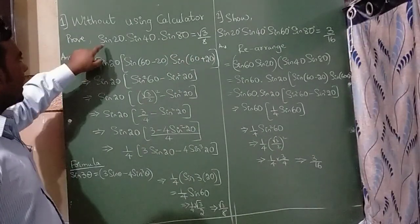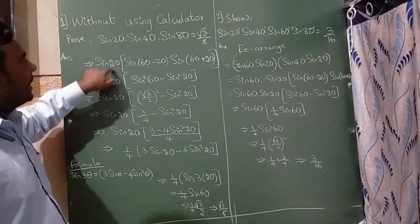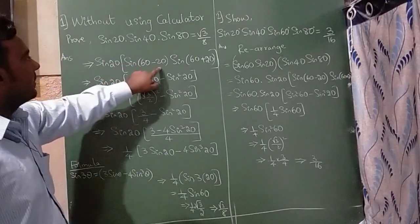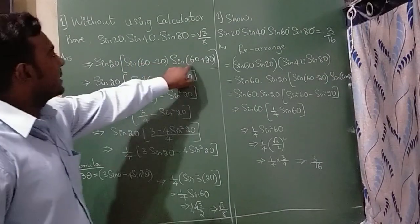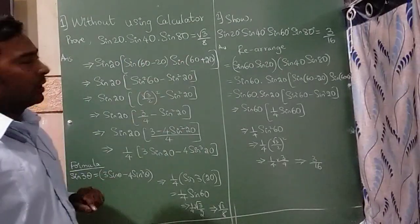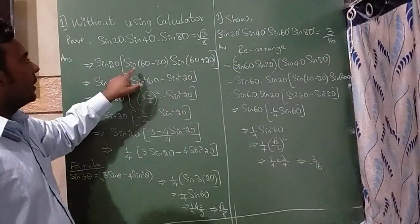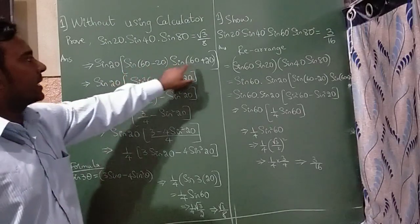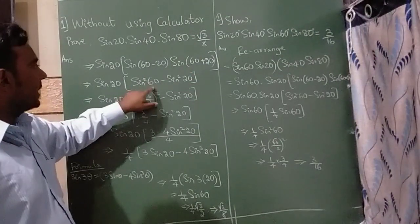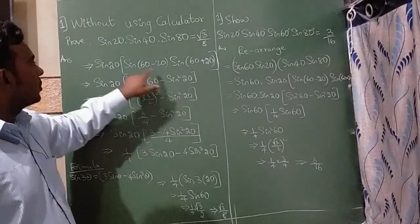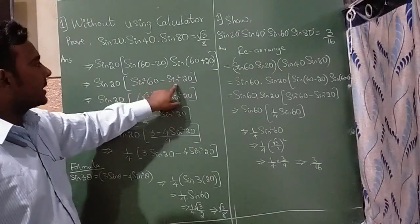So what I am going to do here is, I am going to write sin 20 as it is, sin 40 can be written as 60 minus 20 is 40, 60 plus 20 is 80. So there is a formula here, sin a minus b, sin a plus b is sin a square minus sin b square, so sin square 60 minus sin square 20.